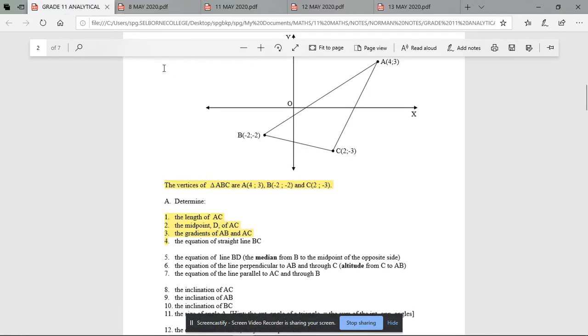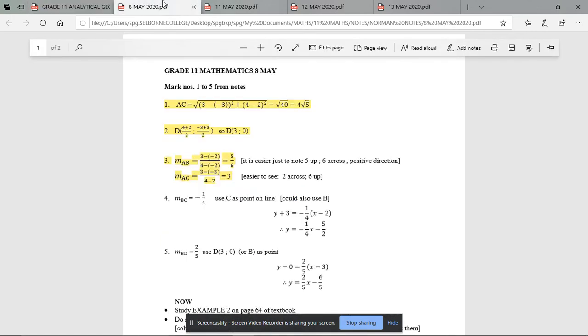The gradient for AB ends up being 5 over 6 and the gradient for AC ends up being 3. Do you notice that AB is more of a flatter line, A to B, versus AC, which is far steeper than AB. And that goes with the answer, AC was a gradient of 3, so it's far steeper than AB, which has a gradient of only 5 over 6.